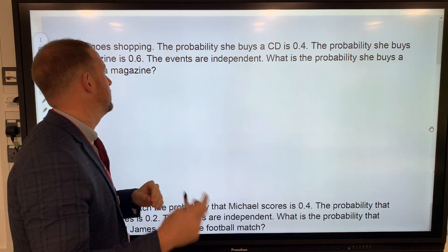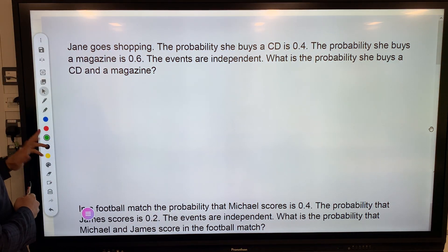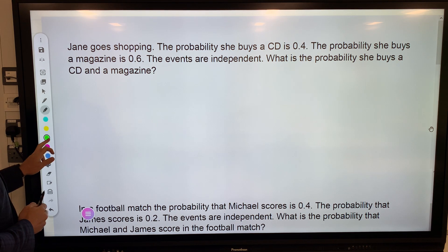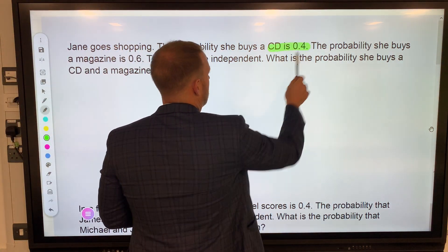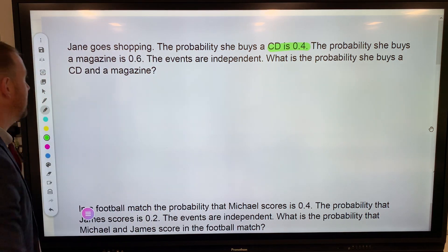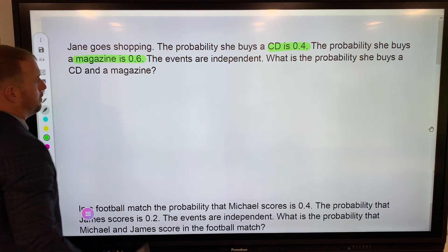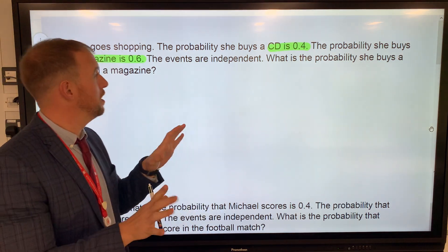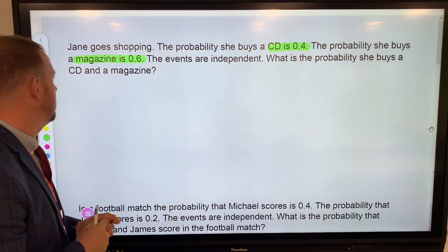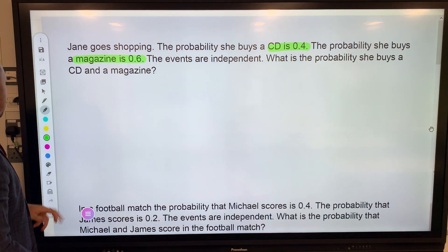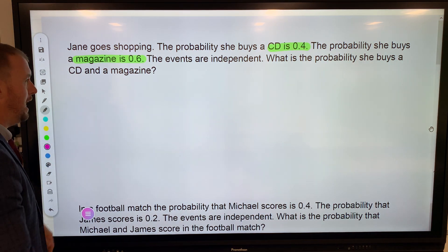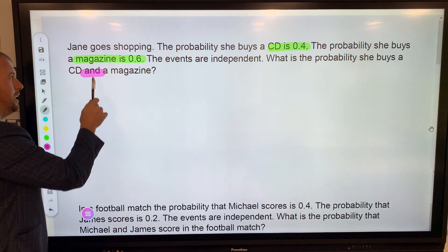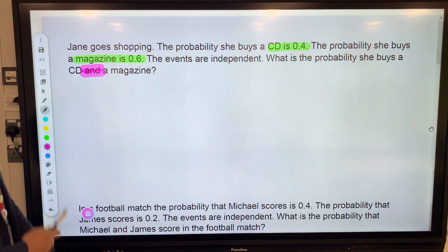Jane goes shopping. The probability she buys a CD is 0.4, the probability she buys a magazine is 0.6, and these events are independent—they are completely separate. What's the probability that she buys a CD and a magazine?